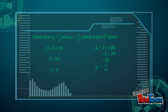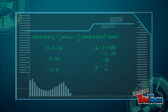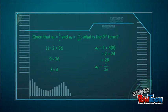Example: a₁ = 1/2 and a₄ = 1/11. What is the 9th term? 11 = 2 + 3d, solving gives d = 3. a₉ = 2 + 3(8) = 26. Therefore, the ninth term is 1/26.